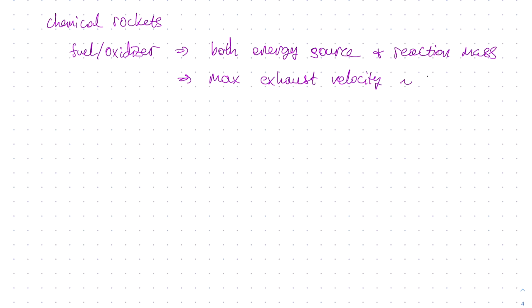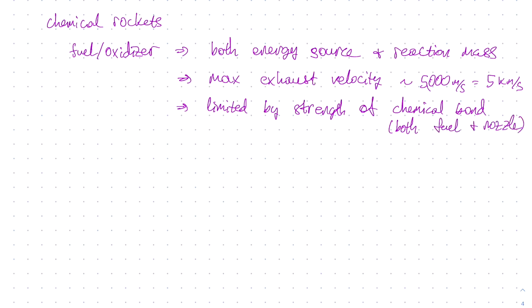Now, we have spent a lot of time discussing chemical rockets. In these types of rockets the fuel and oxidizer serves both as the reaction mass and the energy source. The maximum possible exhaust velocity for a chemical rocket is on the order of about 5,000 meters per second or 5 kilometers per second. While it could be conceivable to maybe find a chemical rocket engine that has exhaust velocity of say 7 kilometers per second we are certainly not going to build one that has an exhaust velocity of say 50 kilometers per second.